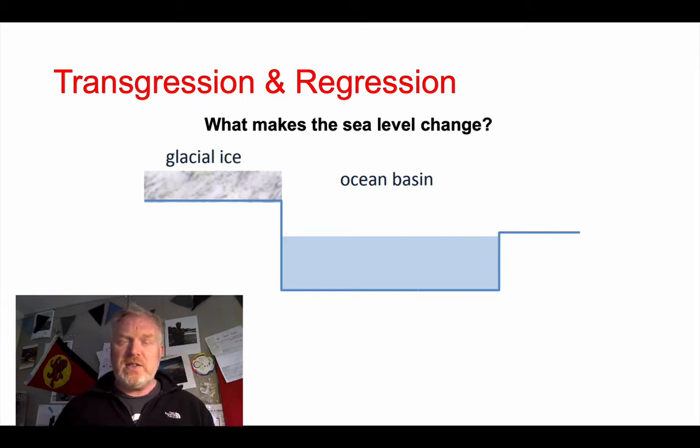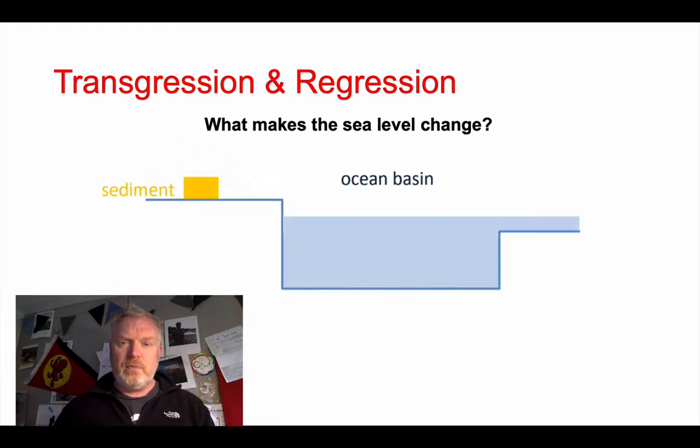Now, if that glacial ice melts, what we'll see is the water from that glacial ice going into the ocean basins. So there's more volume of water in the ocean basin, so it takes up more space, so the sea level rises.